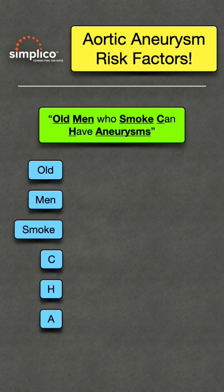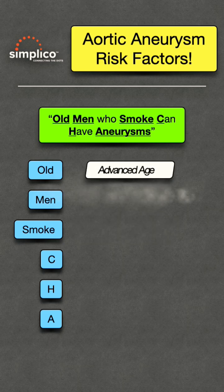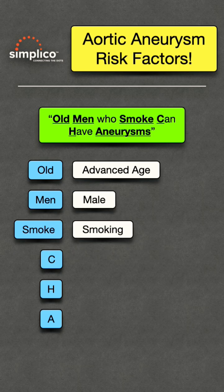You need to see how good this mnemonic is — it uses some of the risk factors right in the sentence. "Old" will help you remember advanced age as a risk factor. "Men" will help you remember that males are at increased risk. "Smoke" will help you remember smoking as a risk factor.